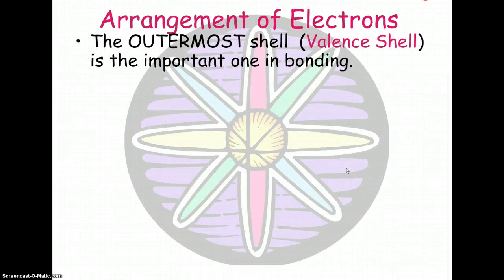And as far as the arrangement of electrons, you'll be happy to know that for this class you don't have to remember the 1s2, 2s2, 2p6, you know, that nightmare. All you really have to know for this class is just that the outermost shell, the valence shell.